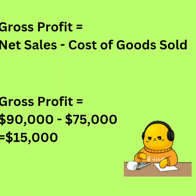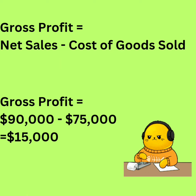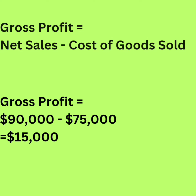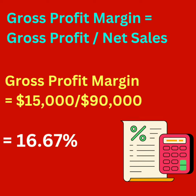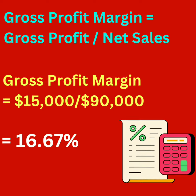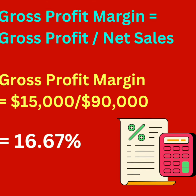Gross profit is net sales minus cost of goods sold — that is $90,000 minus $75,000 — which equals $15,000. Gross margin ratio equals $15,000 divided by $90,000,